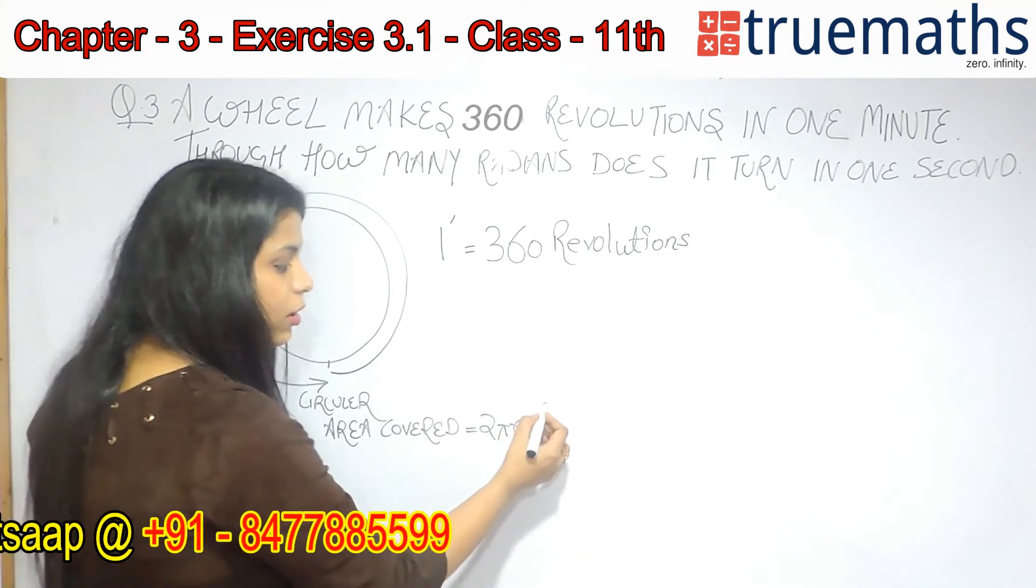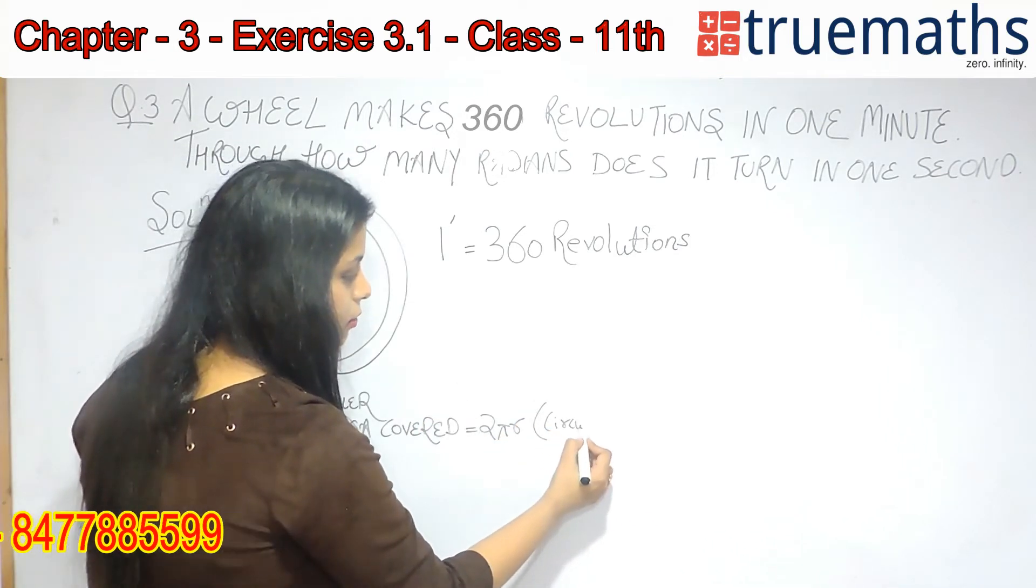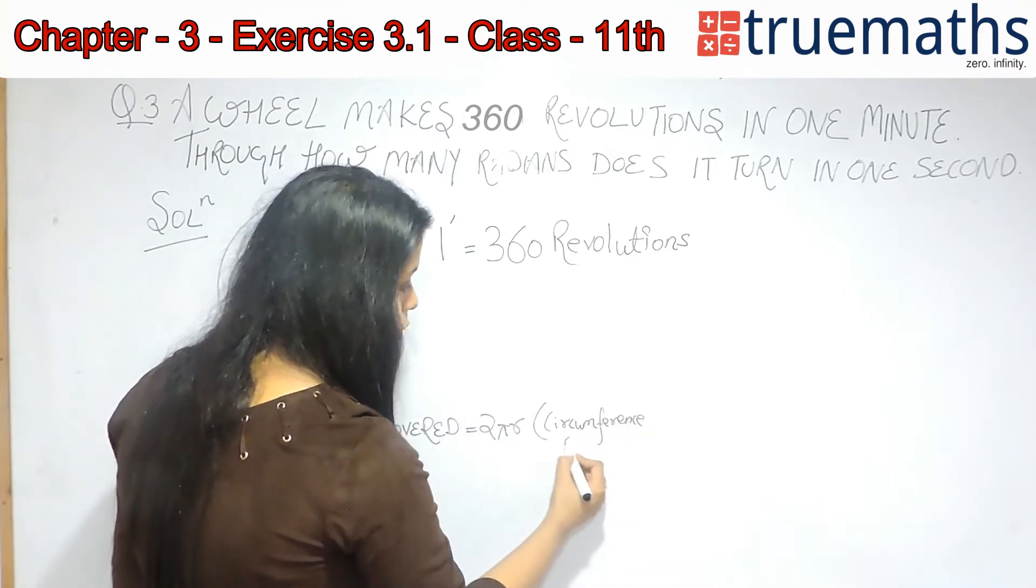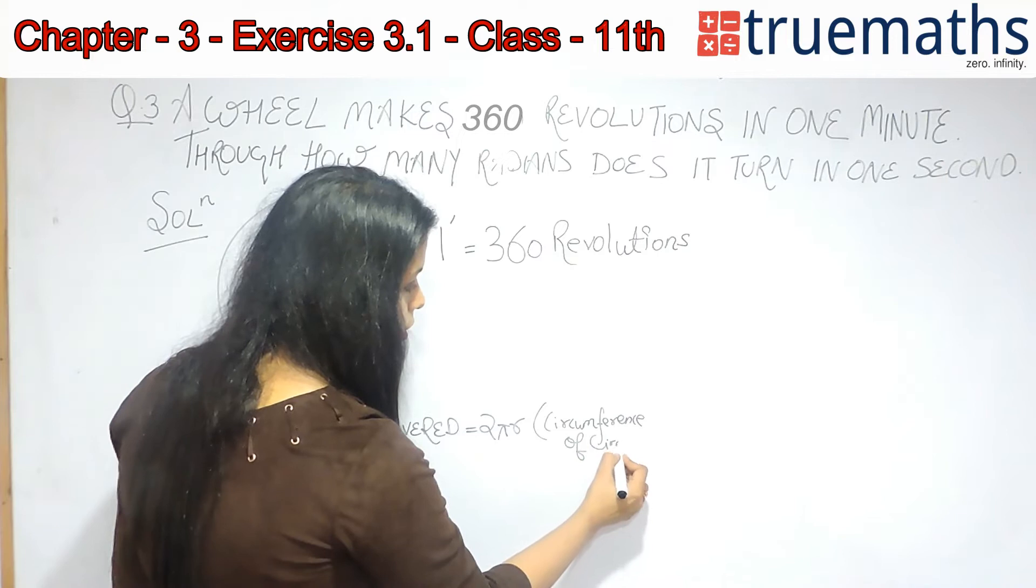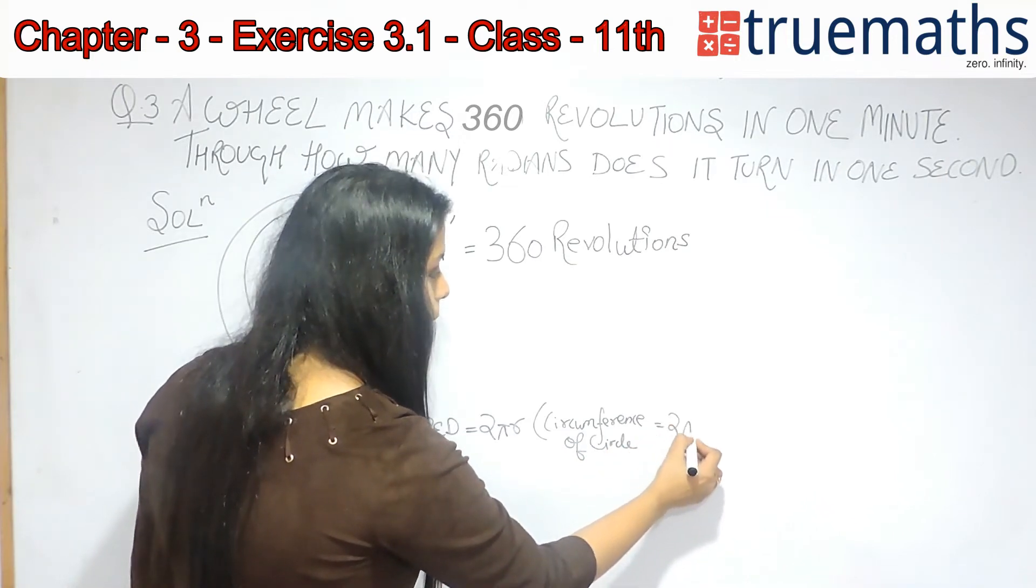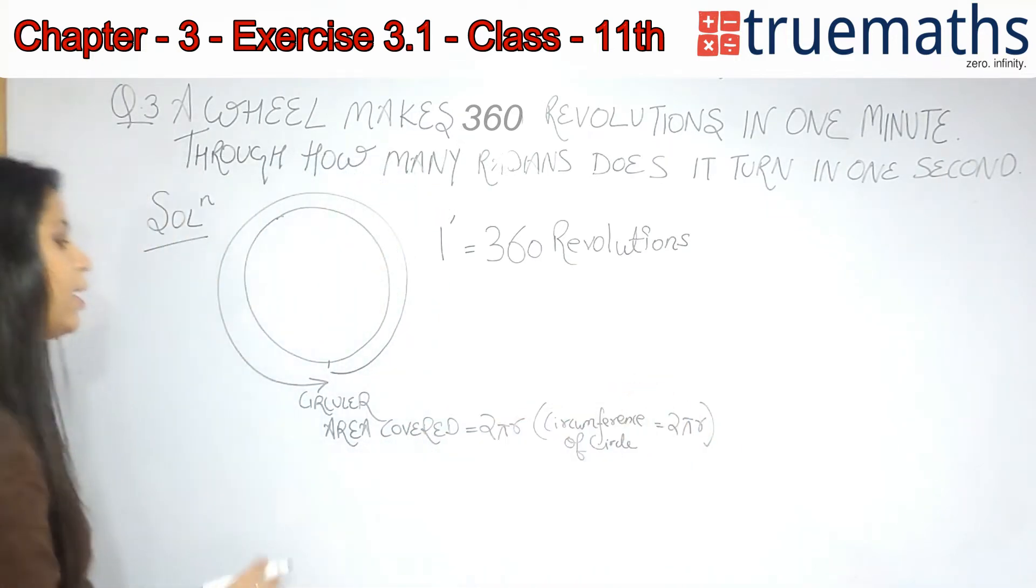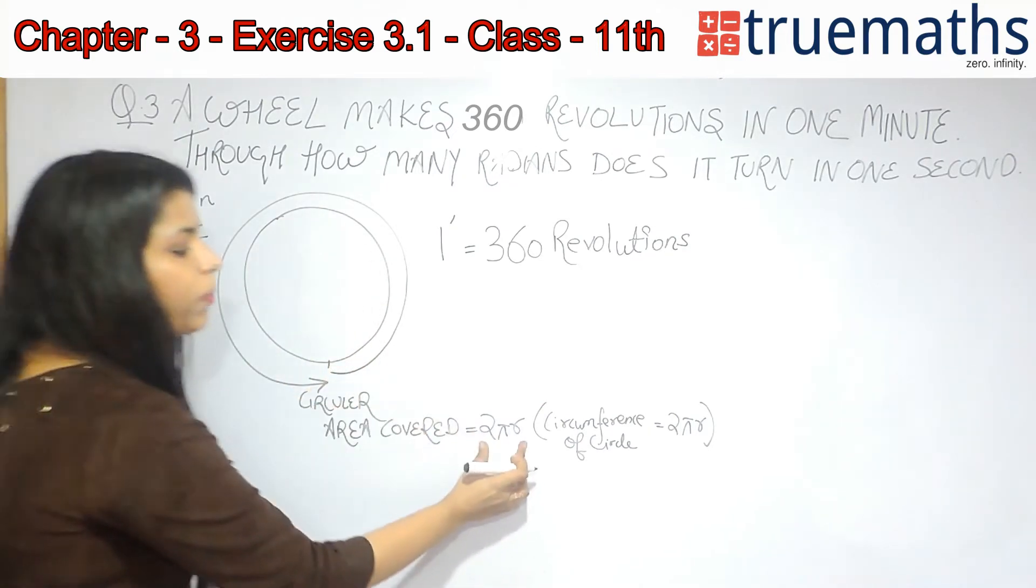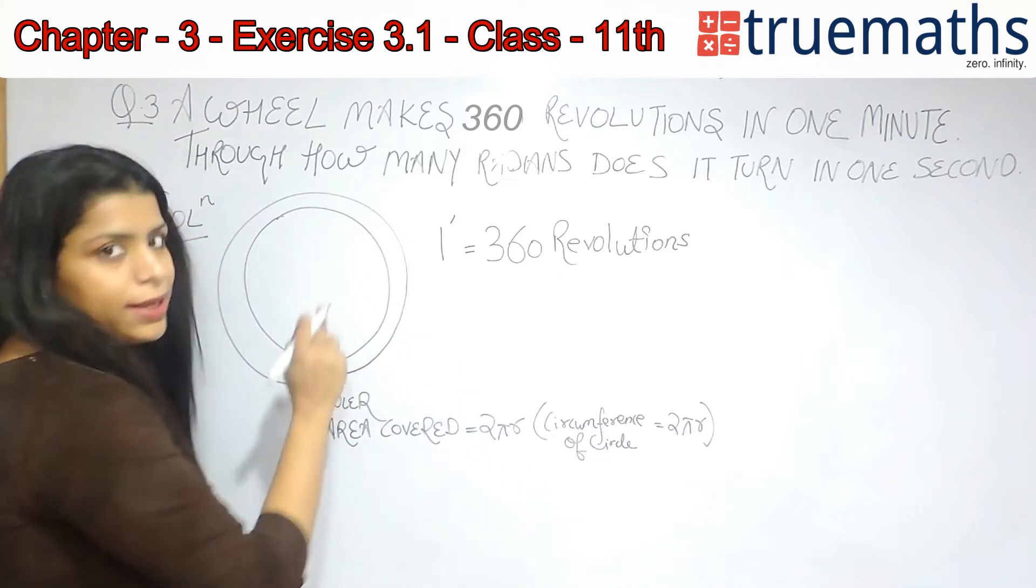Since I know that circumference of a circle is 2πr, I can say that one complete revolution of the wheel is covering 2πr as the area.